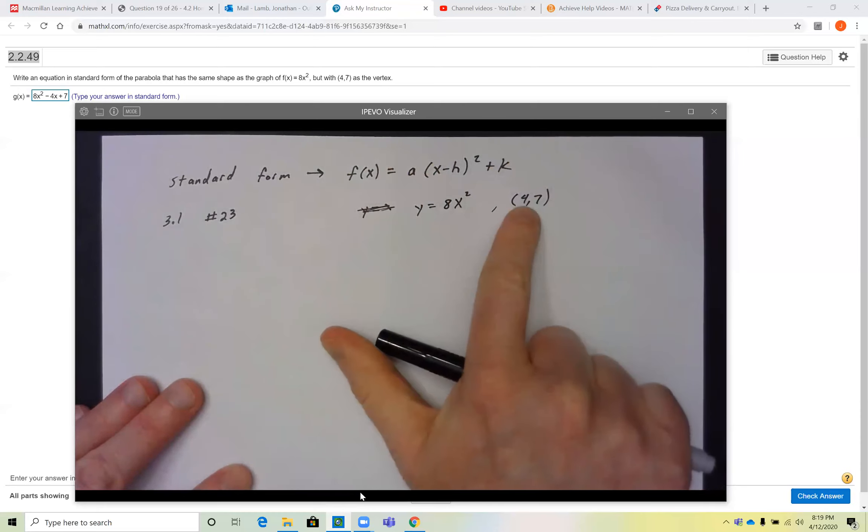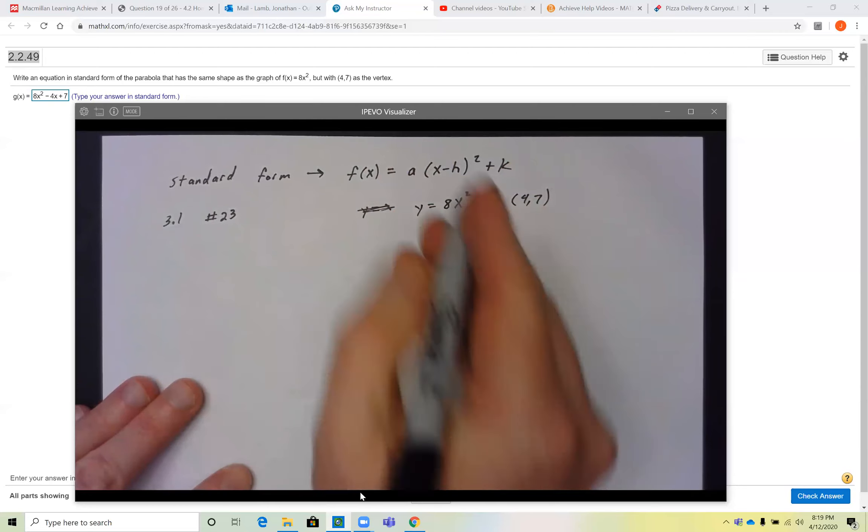All you're saying is, well I have to shift this four units to the right and then up 7, so it has the exact same shape. The a value is 8.